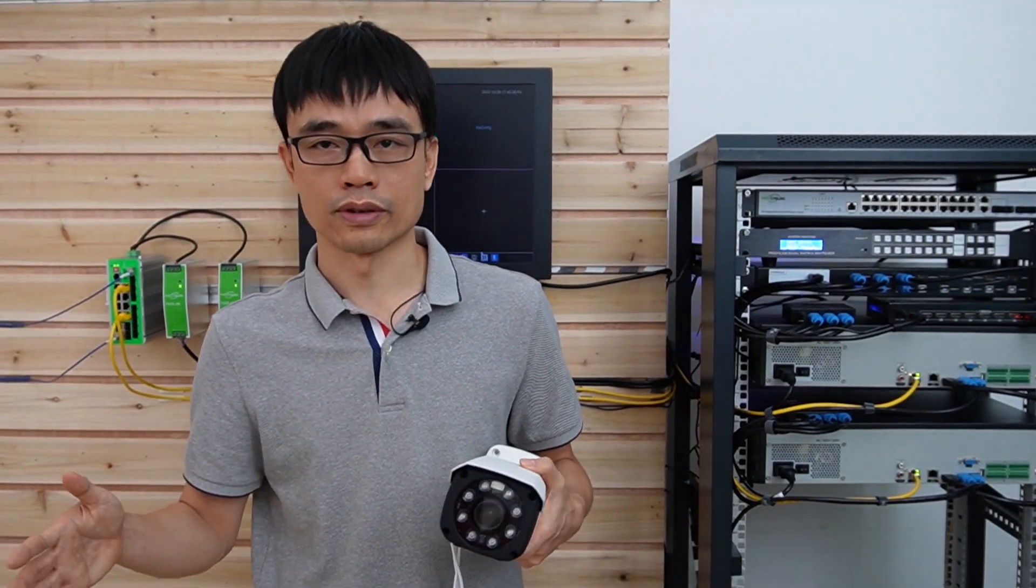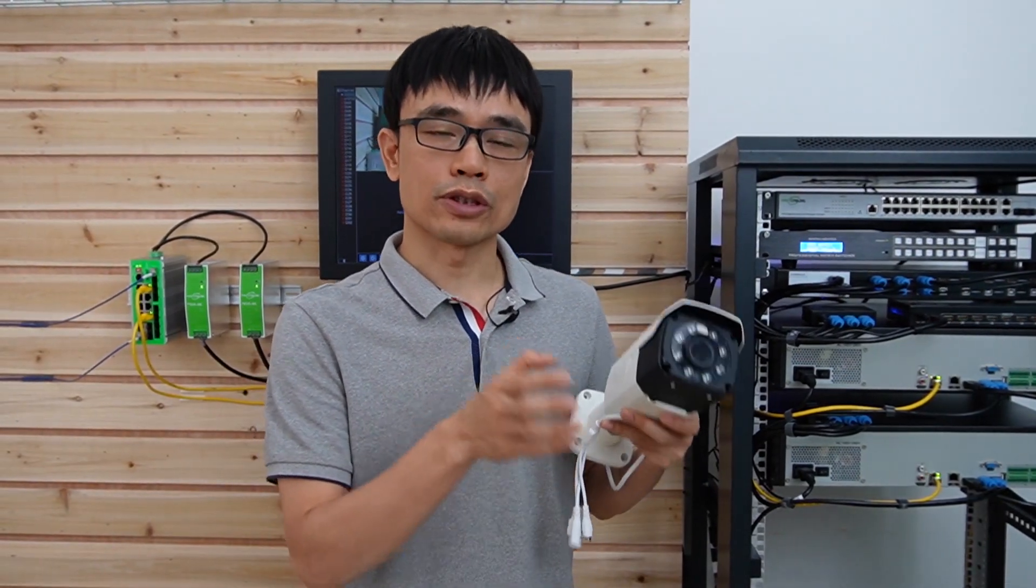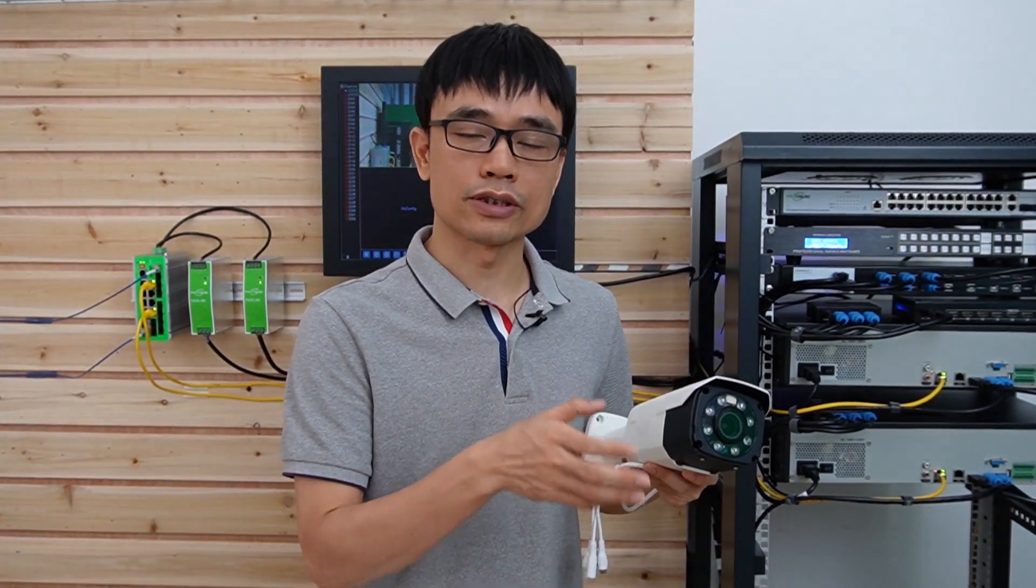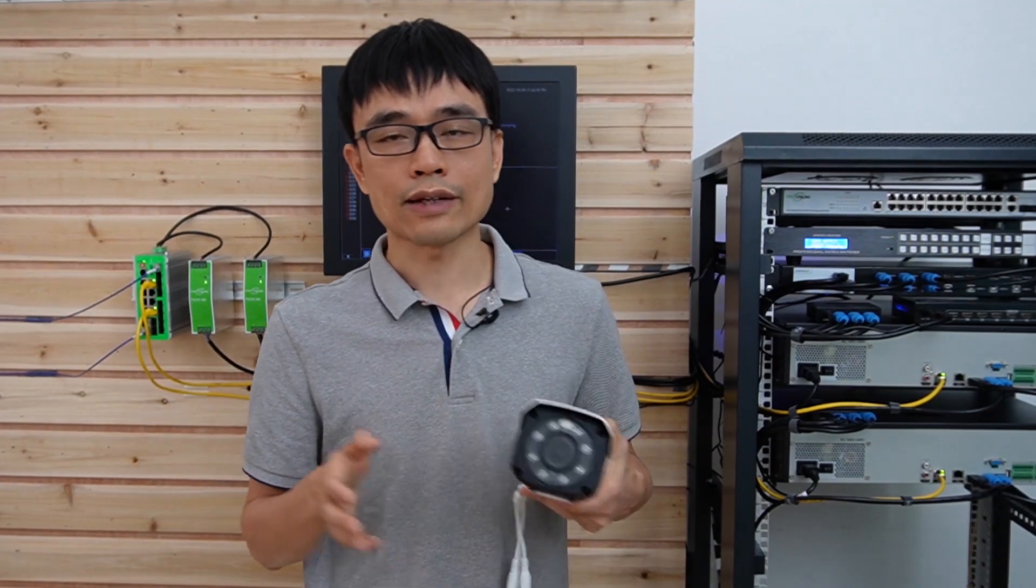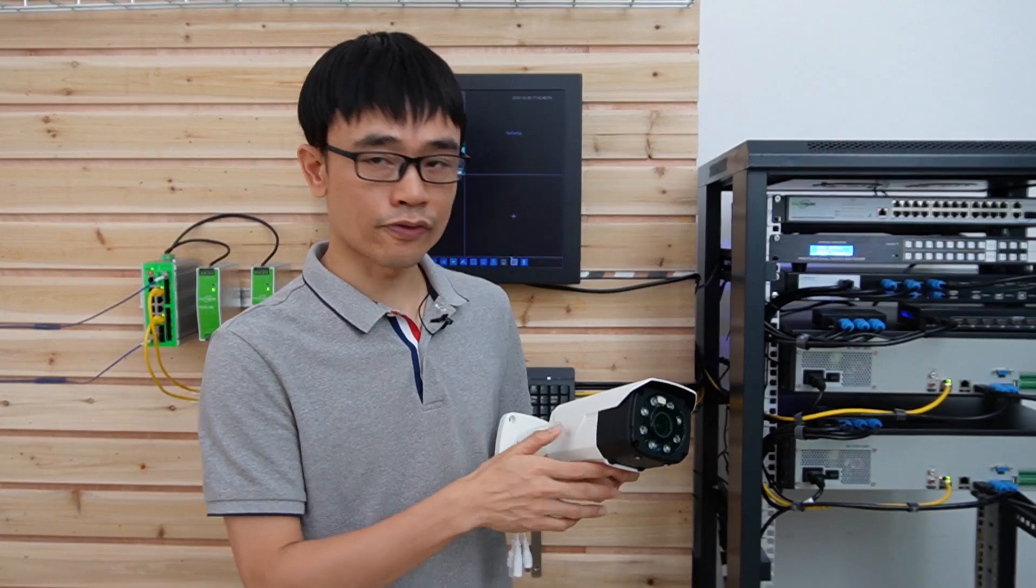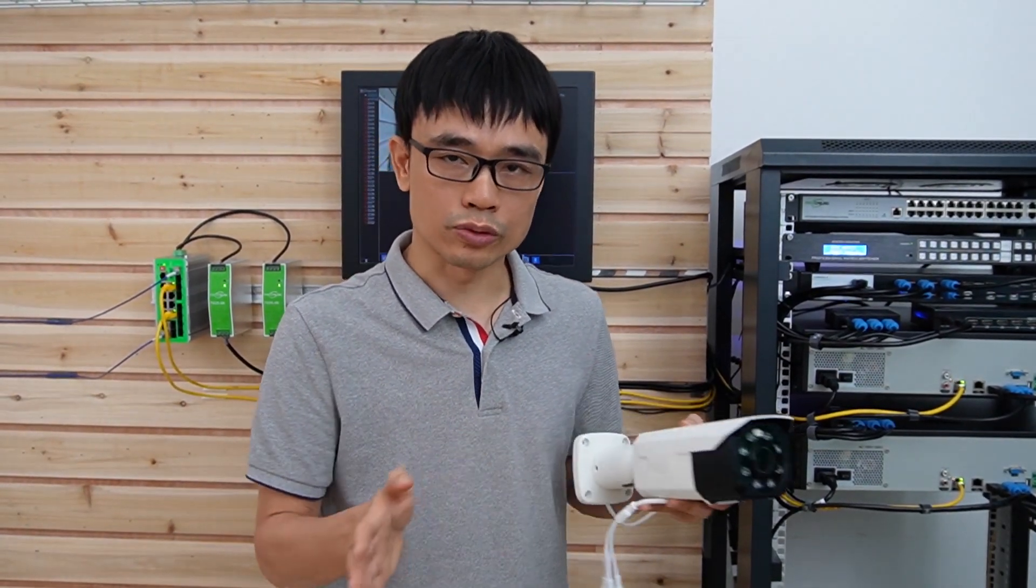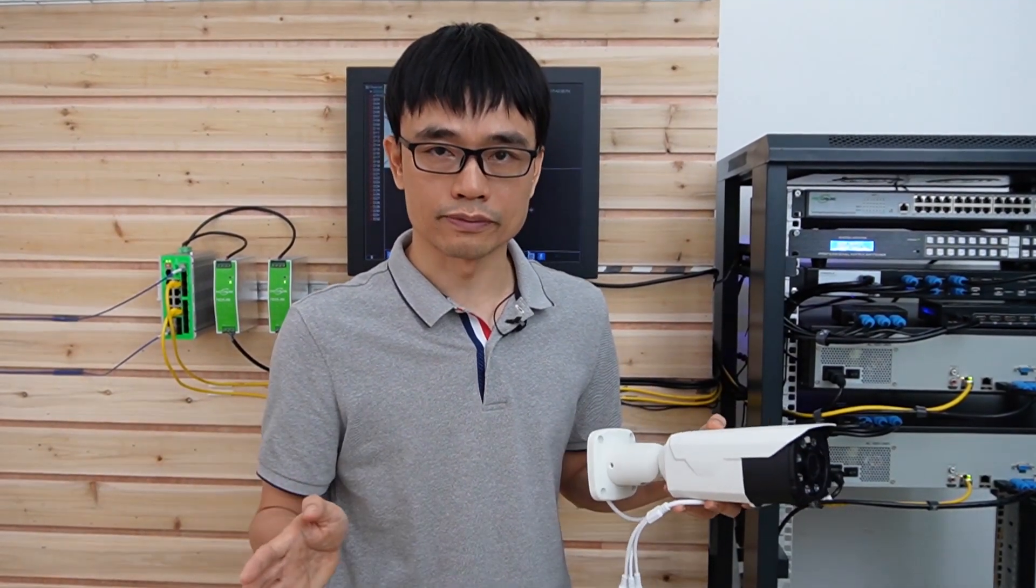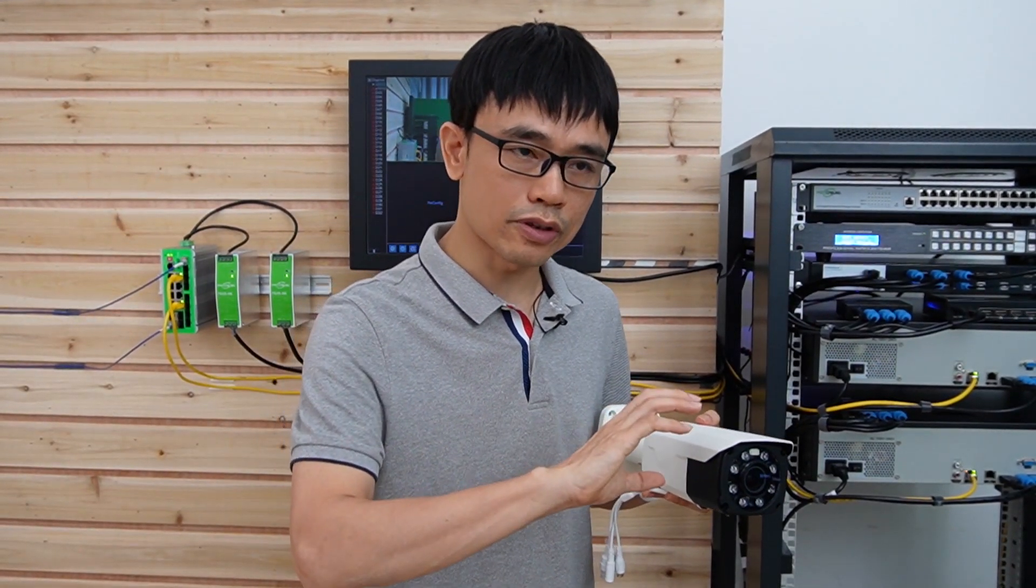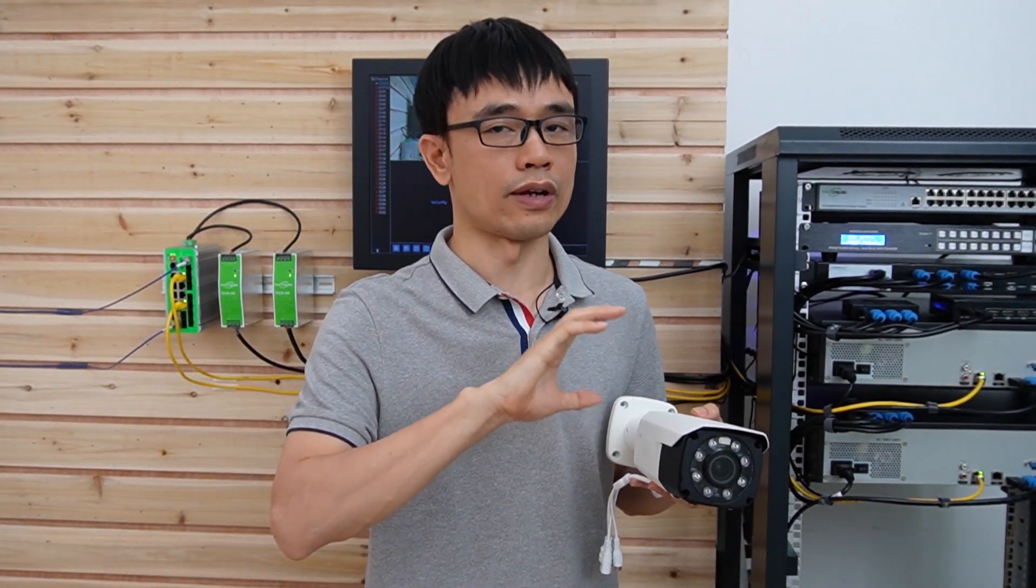There's always a trade-off between the pixel density and field of view, which is how wide the camera can see. If we want to increase the pixel density, we may need to sacrifice the field of view. For example, if we use this 4MP IP camera to watch the whole football playground, the pixel density will become very low because the camera needs to cover a large area. But if we zoom in this camera just pointing to a single spot at the entrance, the pixel density will be very high.